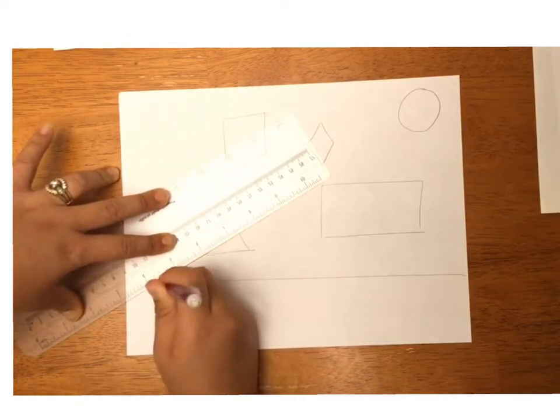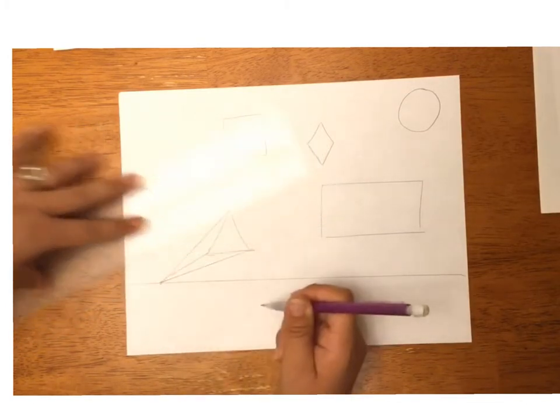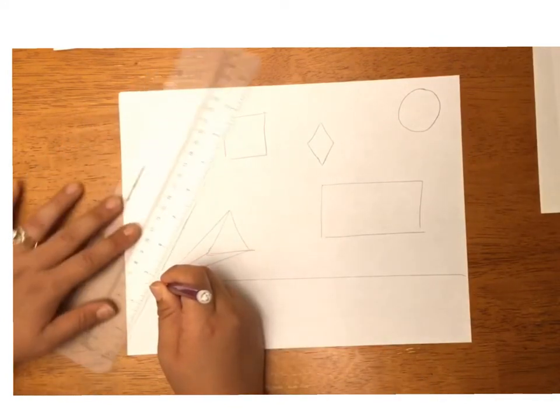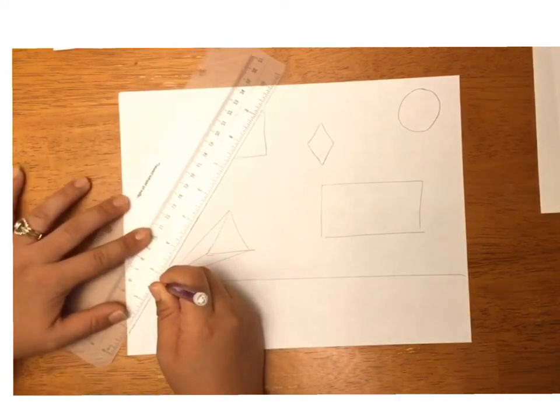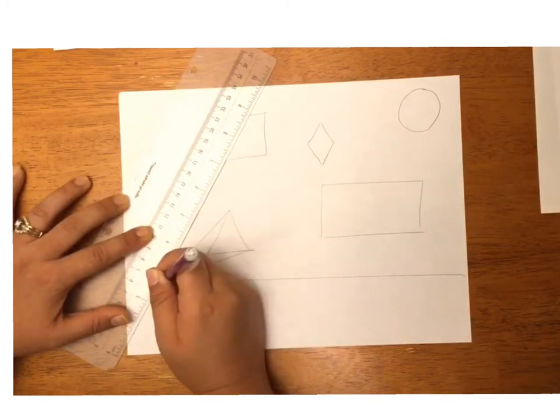Next, I'm going to tackle the square above the triangle. Again, I'm drawing lines to all of the corners, just like that.